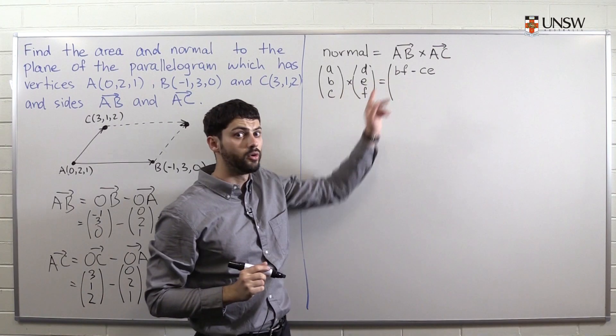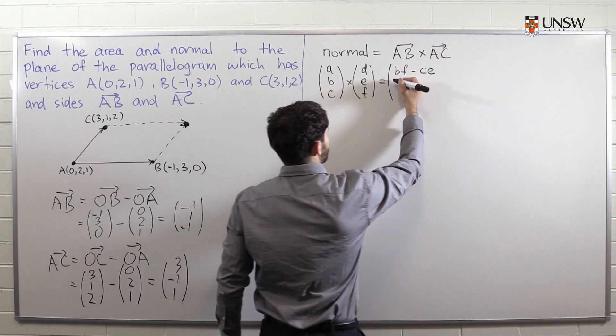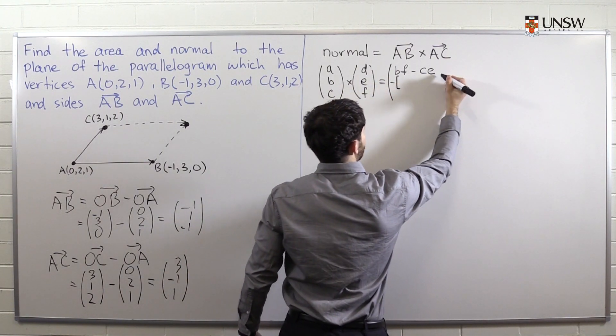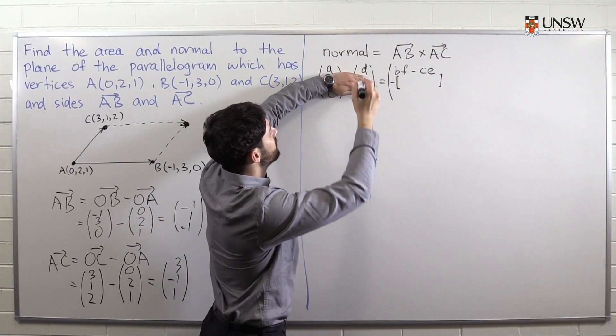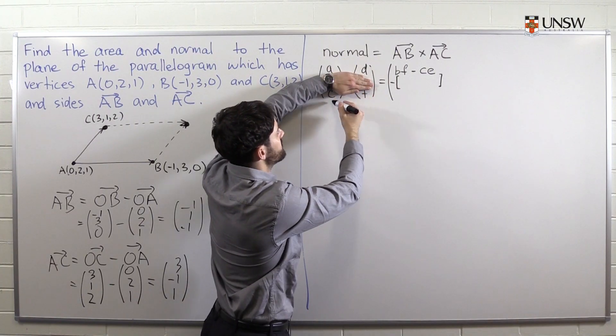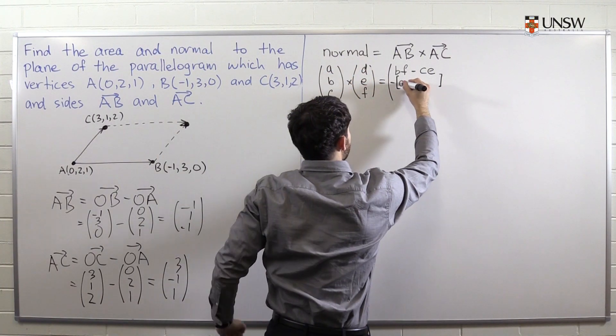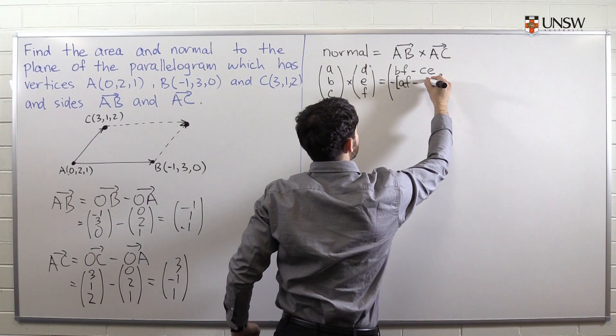To find the second coordinate of the vector, the first thing we must do is put a minus sign. And then it's a very similar procedure, except now we ignore the second row. We are left with a, f, and c, d. So it's af minus cd.